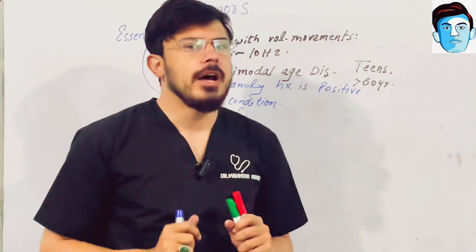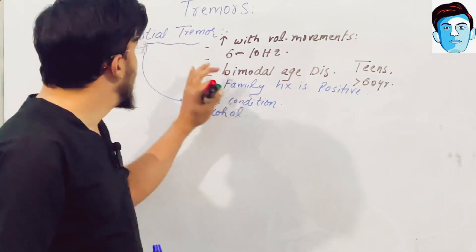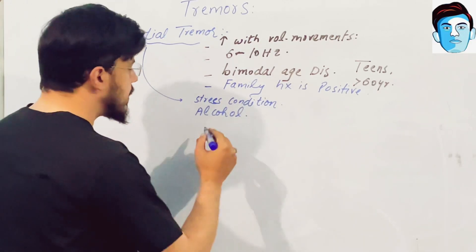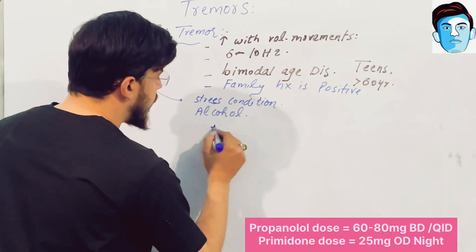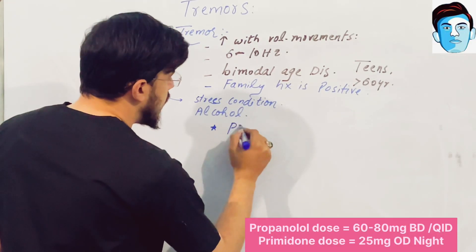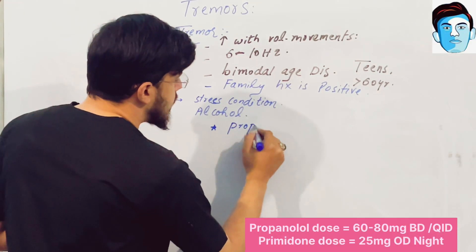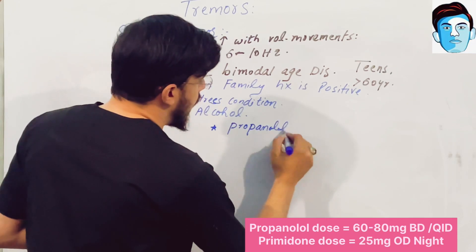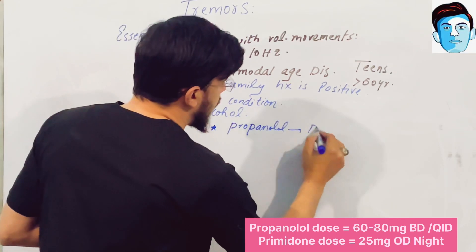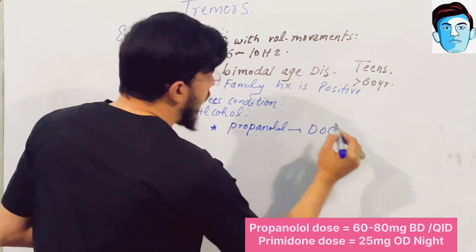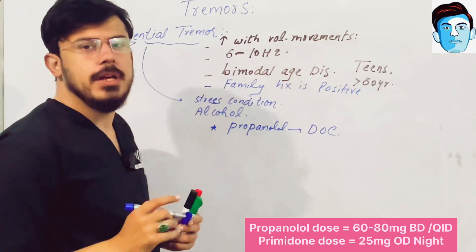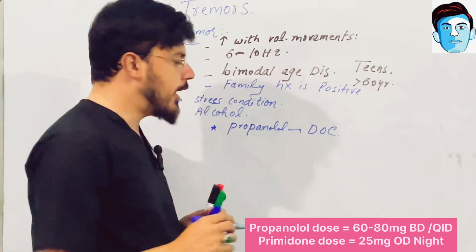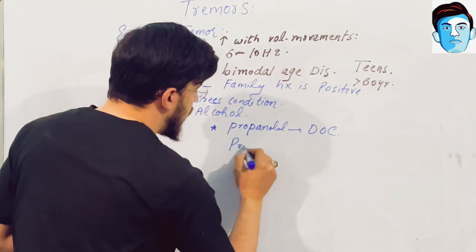The treatment option for essential tremors — the drug of choice is propranolol. The second option, instead of propranolol, is primidone.